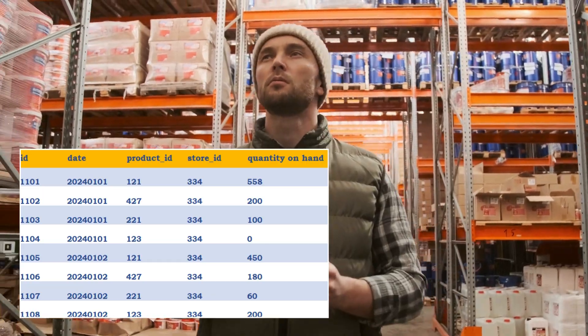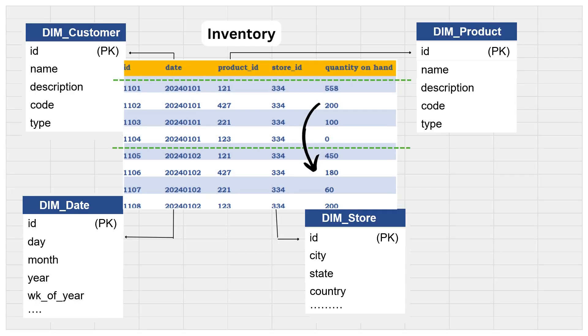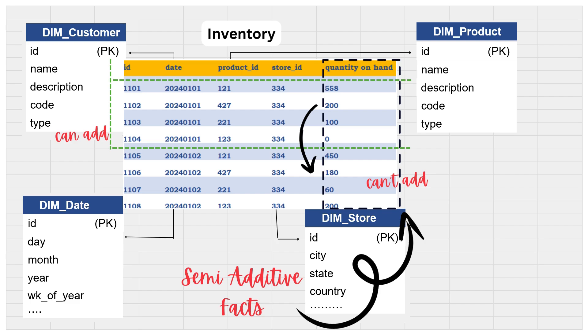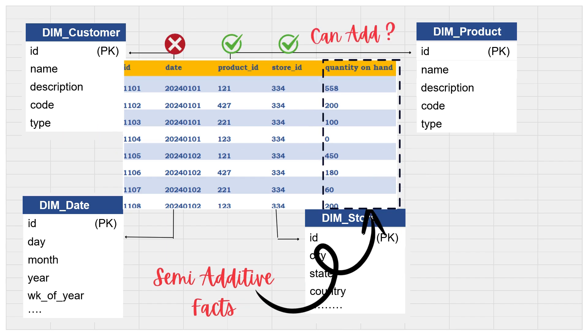Let's consider the sample inventory table. Here, each day the inventory is updated as products are moved in and out of the stores. We can add the quantity on hand to get the total amount of inventory available in the stores for a given date, but we cannot add across all dates to get the total amount of inventory available. We can aggregate across the stores and products dimension, but not across the date dimension. The inventory level of a product on a particular date is not equal to the sum of the inventory levels on previous dates. Facts like that, which can be added across some dimensions but not all, are called semi-additive facts.